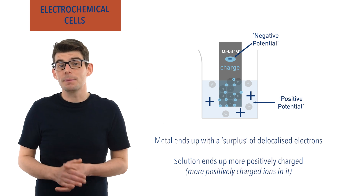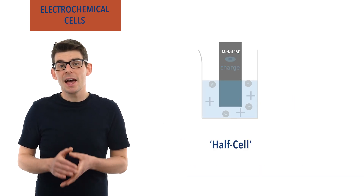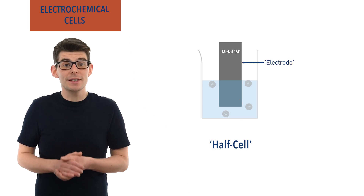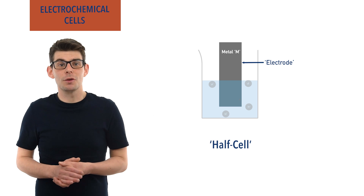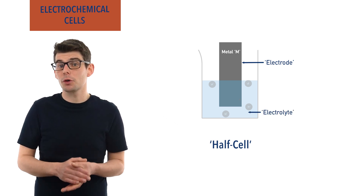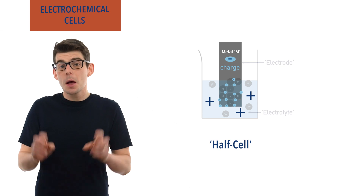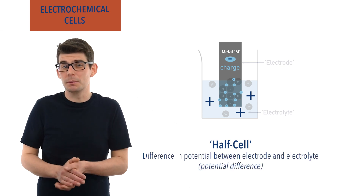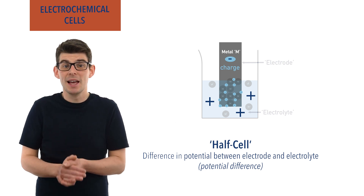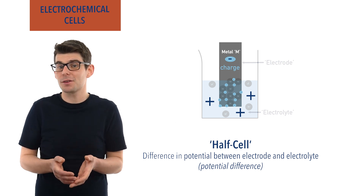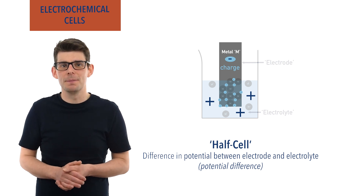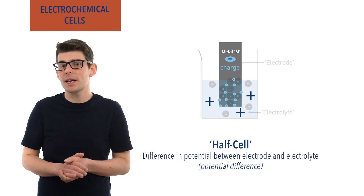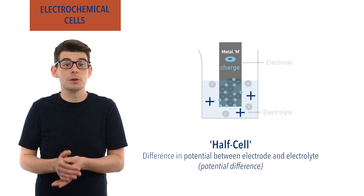As a result, the solid metal ends up being negatively charged compared to the solution and is said to have a negative electrical potential, and the solution ends up positively charged compared to the metal and has a positive electrical potential. This whole setup is referred to as a half cell. The solid metal placed in the solution is called an electrode and the solution itself is called an electrolyte. Because the two potentials of the electrode and electrolyte are different, there is a potential difference between them. The potential difference between them can't actually be measured directly, as you instantly affect the potentials of the electrode and electrolyte if you tried to measure them.